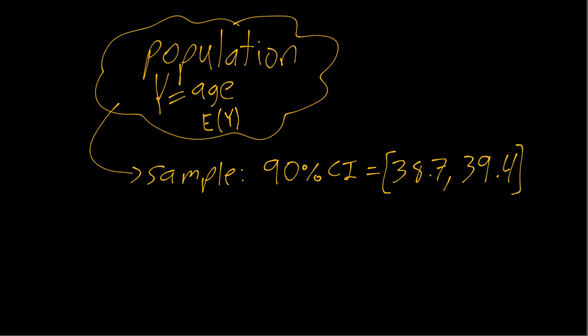So here imagine we are interested in the mean age of a certain population, and we take a sample of data and compute a 90% CI that's equal to the interval from 38.7 years to 39.4 years.